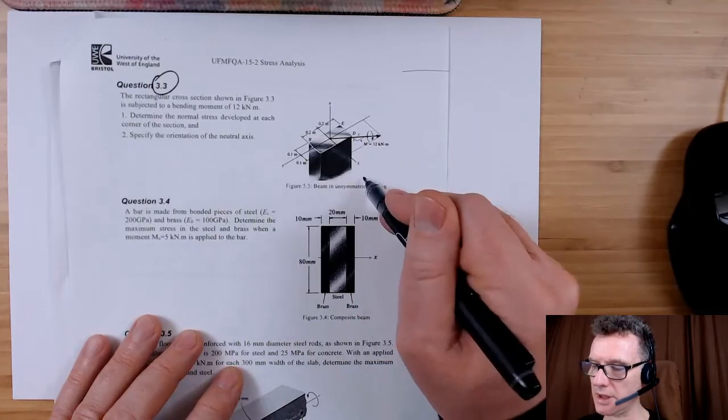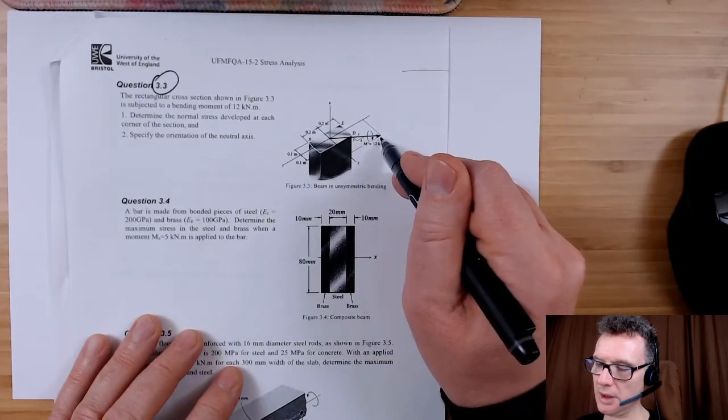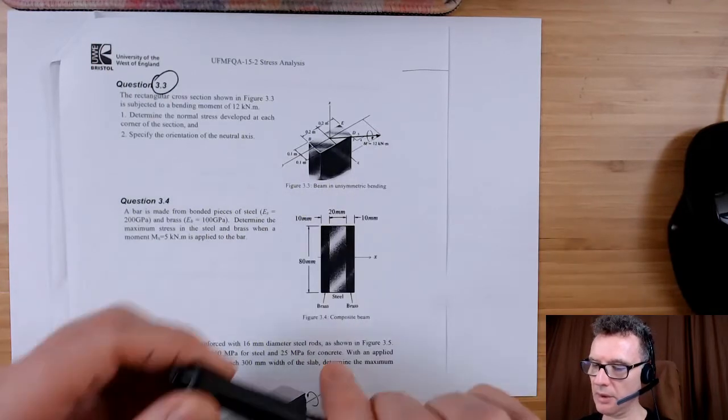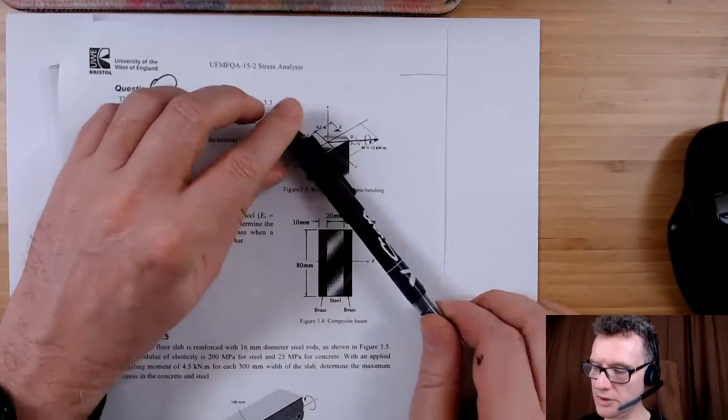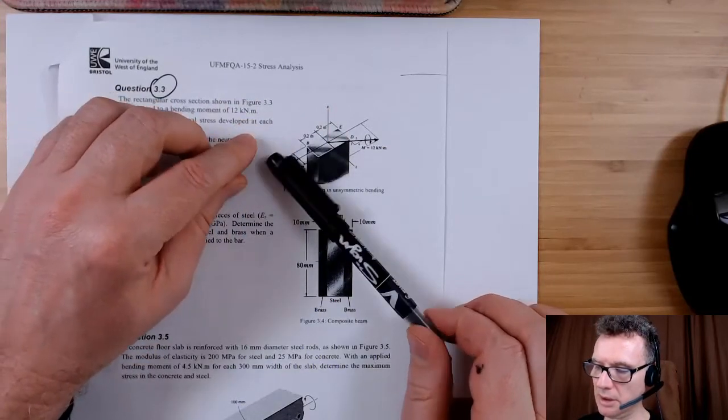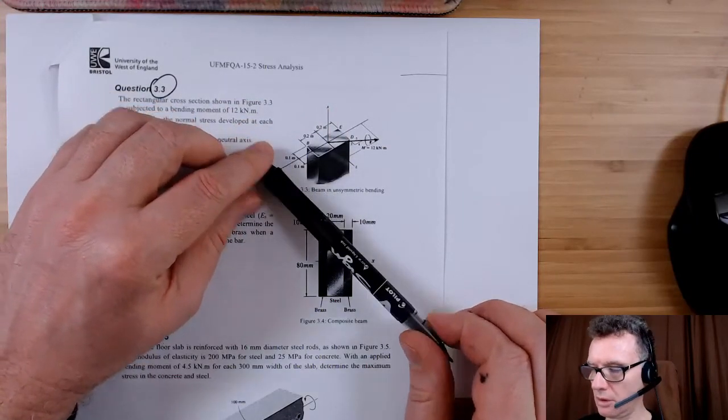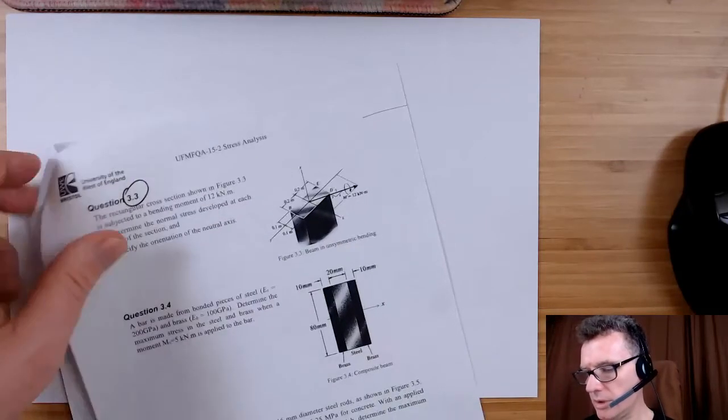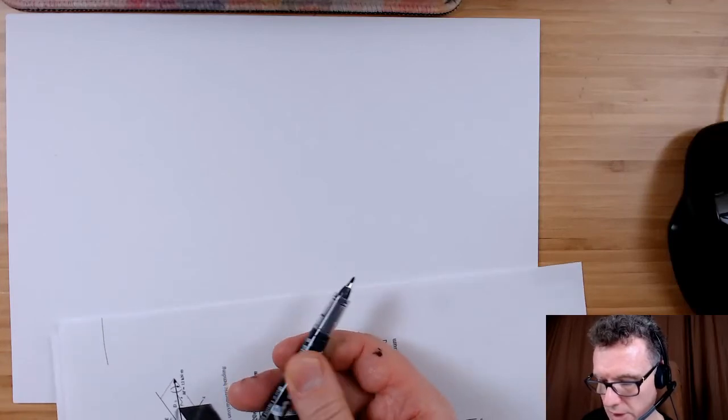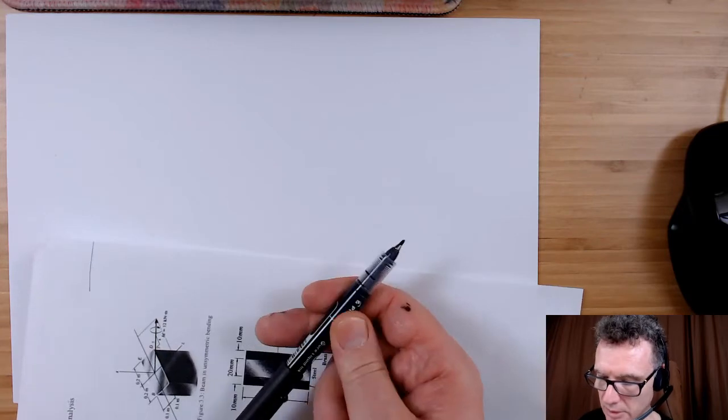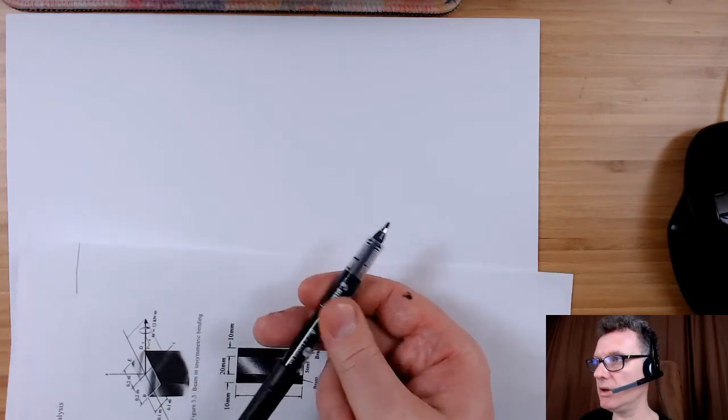When I rotate it and move it down to this axis, we can see that we've got it pointing off in the Z direction and it's going in a clockwise sense in the Z direction.